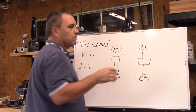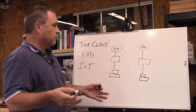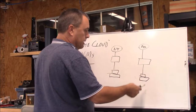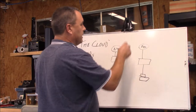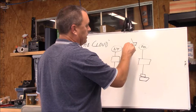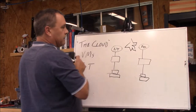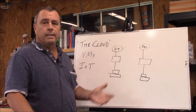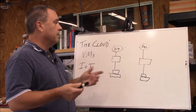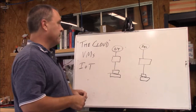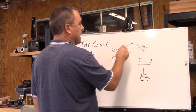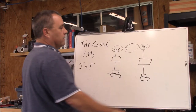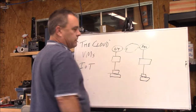We needed something to represent the rest of the network. You can't use a circle — circles are used. Squares are used. You could try to draw a star, but network engineers are bad at drawing, and it's not fast. So someone came up with the idea — I don't know who or what company — but they started drawing a cloud, and that represented everything else.